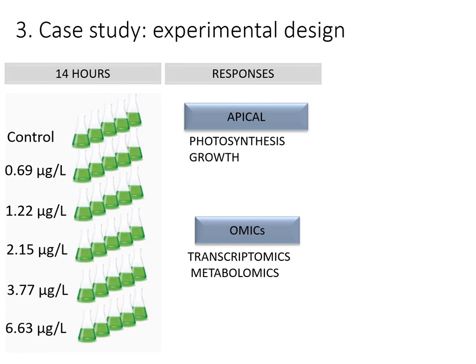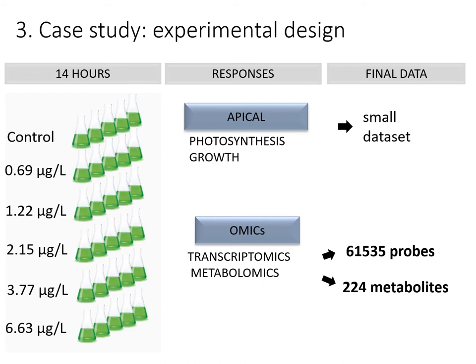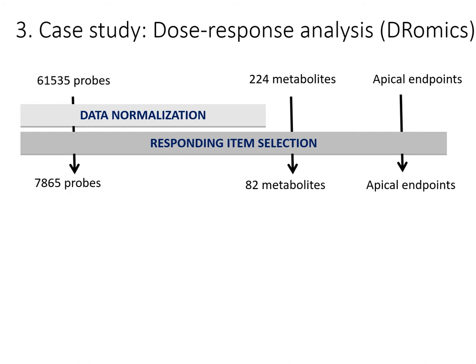At the end, we obtained a classical dataset for apical endpoints, but also the responses of more than 60,000 probes and 224 metabolites. Then we imported both apical and molecular data into DROMIX for downstream analysis. At the beginning of the analysis, so we imported the response of more than 60,000 probes, 224 metabolites, and 2 apical endpoints.